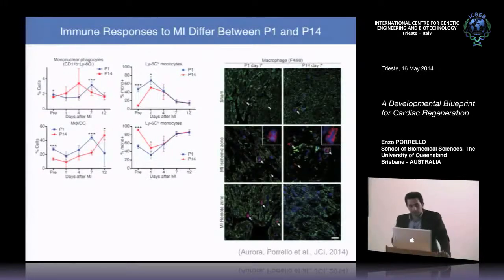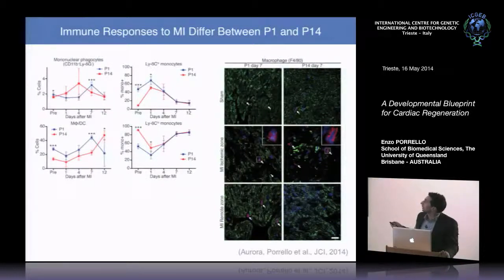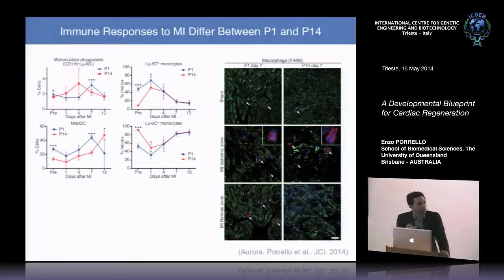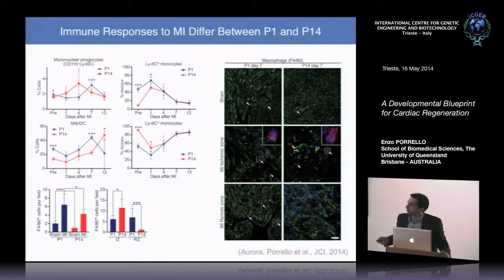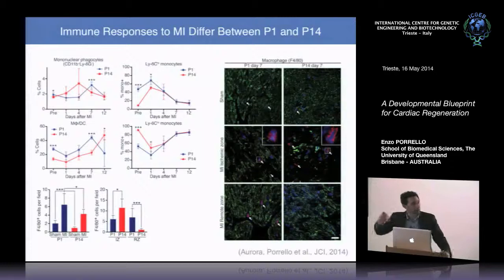Looking at macrophages following infarction at P1 versus P14, both show increased macrophages in infarcted hearts. However, at P14 macrophages are restricted to the ischemic zone, whereas at P1 they are distributed throughout the heart in both ischemic and remote zones. Quantification confirms: while macrophage numbers increase following MI at both ages, in the 14-day-old heart they're mainly in the ischemic zone, whereas in the one-day-old heart they appear in both ischemic and remote regions.